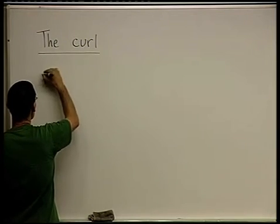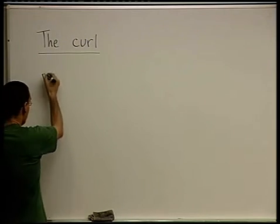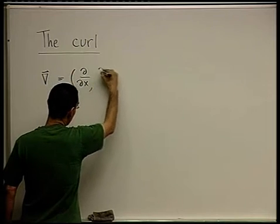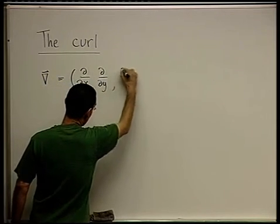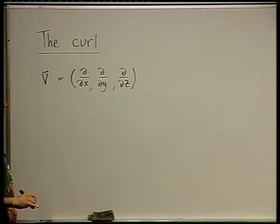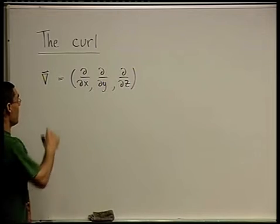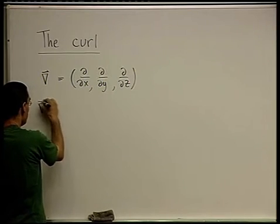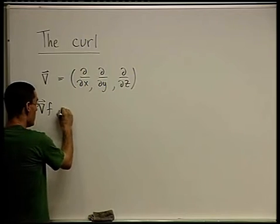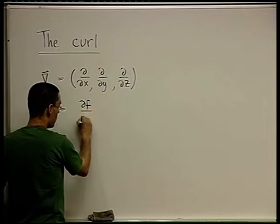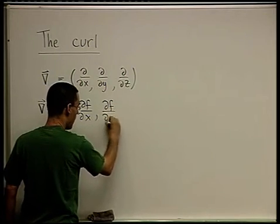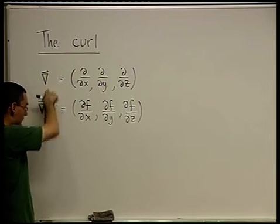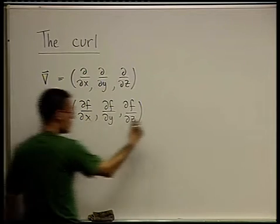We've already met the Nabla operator, which is a vector whose components are the partial derivatives with respect to the coordinates x, y, and z. From this operator we saw two variants: if it operates on a scalar function f, then what we get is a vector — the gradient — with components being the derivatives of f with respect to x, y, and z.